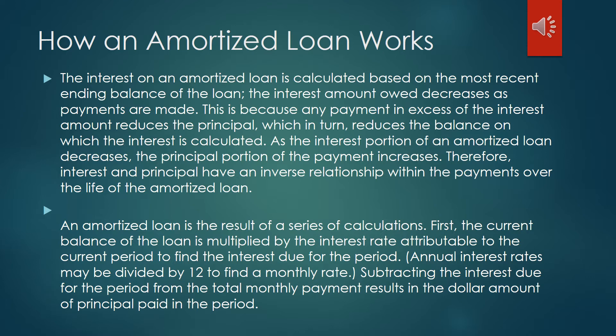As the interest portion of the amortized loan decreases, the principal portion of the payment increases. Therefore, interest and principal have an inverse relationship within the payments over the life of the loan. At the beginning of the loan, the interest costs are high. For long-term loans, the majority of each monthly payment is an interest expense, and only a small amount is deducted from the principal. As time goes on, more payment goes towards the principal and less on the interest.